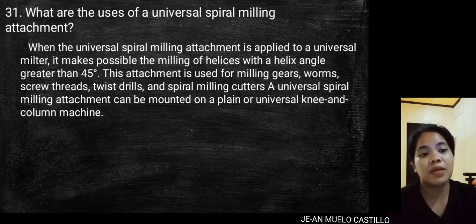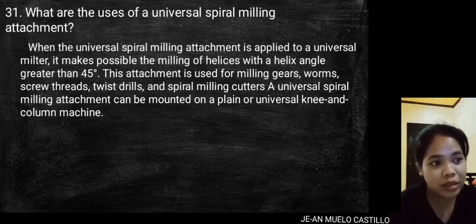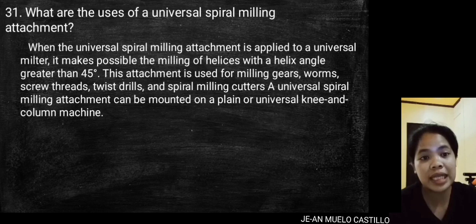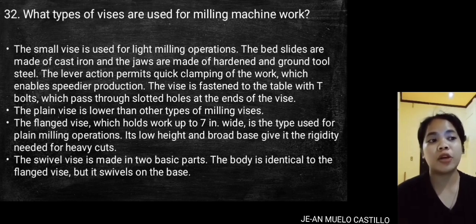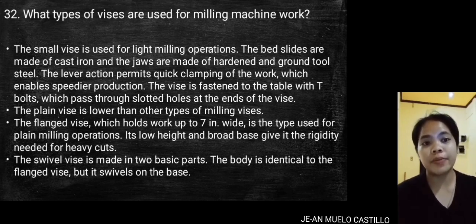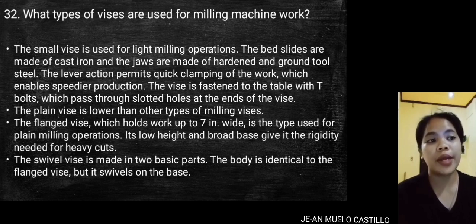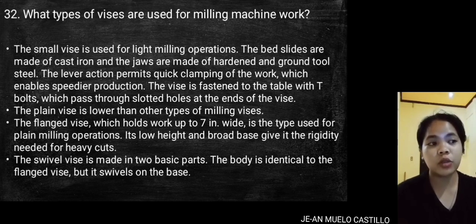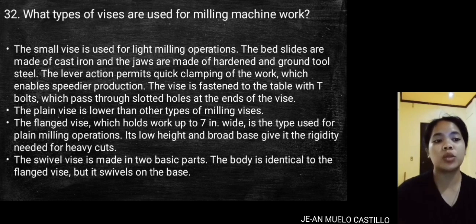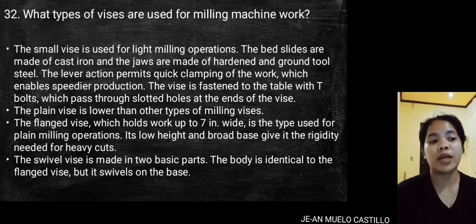A universal spiral milling attachment can be mounted on a plain or universal knee and column machine. What types of vices are used for milling machine work? The small vice is used for light milling operations. The bed slides are made of cast iron and the jaws are made of hardened and ground tool steel. The lever action permits quick clamping of the work, enabling production efficiency.